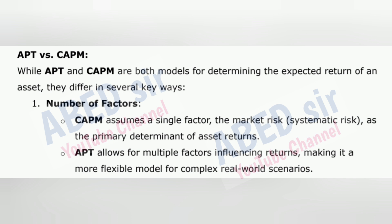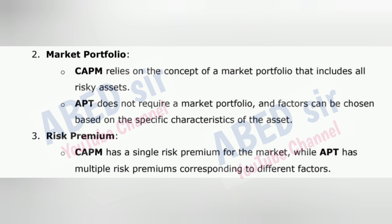APT vs. CAPM: While APT and CAPM are both models for determining the expected return of an asset, they differ in several key ways. 1. Number of factors — CAPM assumes a single factor, the market risk (systematic risk), as the primary determinant of asset returns. APT allows for multiple factors influencing returns, making it a more flexible model for complex real-world scenarios. 2. Market portfolio — CAPM relies on the concept of a market portfolio that includes all risky assets. APT does not require a market portfolio, and factors can be chosen based on the specific characteristics of the asset.